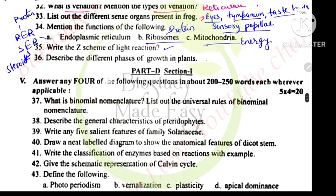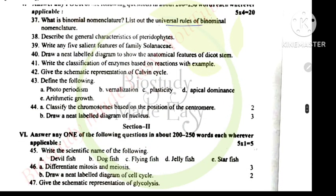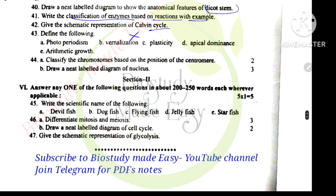Five marks. What is binomial nomenclature and universal rules of nomenclature. General characteristics of pteridophytes, Solanaceae salient features, dicot stem diagram, classification of enzymes with example, very important topic. Schematic representation of Calvin cycle. Classification of chromosomes based on centromere: metacentric, submetacentric, and acrocentric.